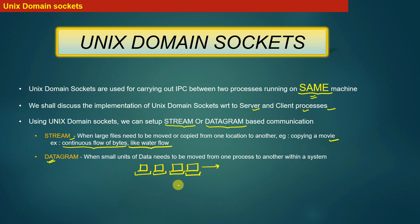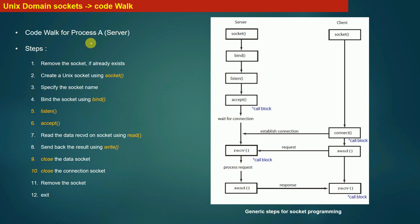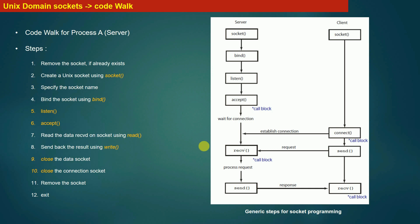Next, let us discuss the steps involved in creating a socket-based communication on a server process. We will discuss the implementation details for implementing UNIX domain socket-based communication on the server process. Listed are the steps for implementing socket-based communication for a server process. On the right-hand side you can see a diagram which captures the flowchart of steps to implement socket programming communication between the server and the client process.